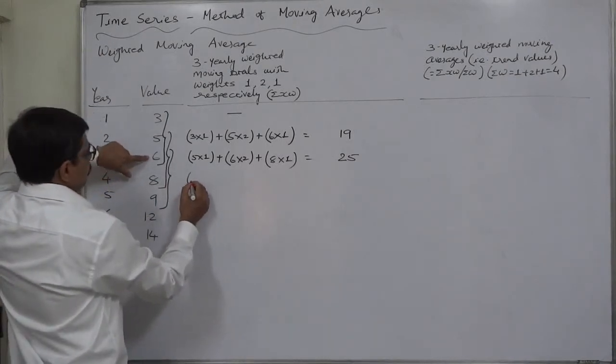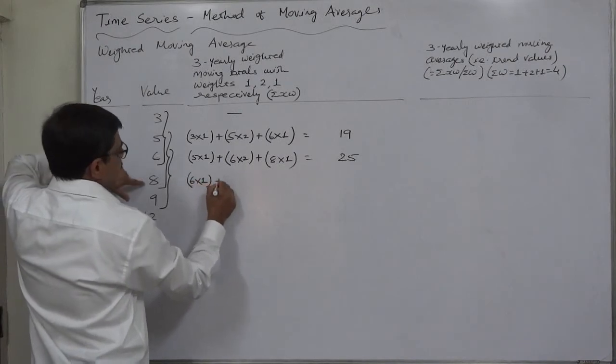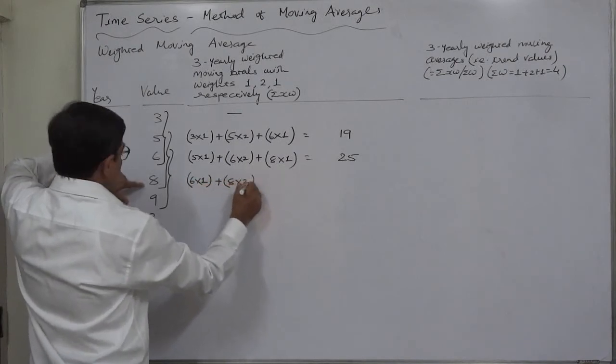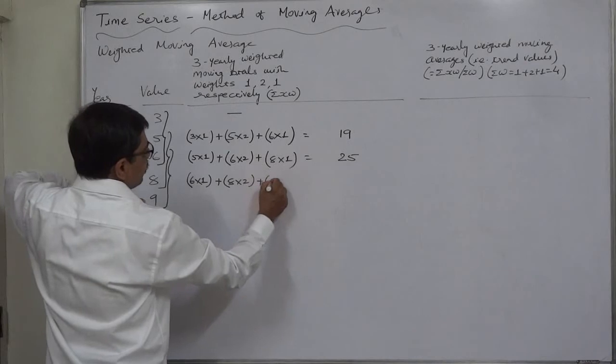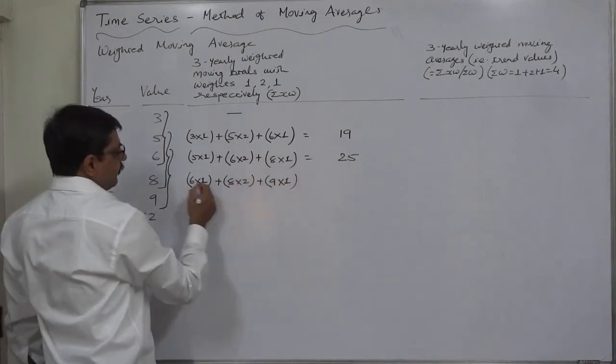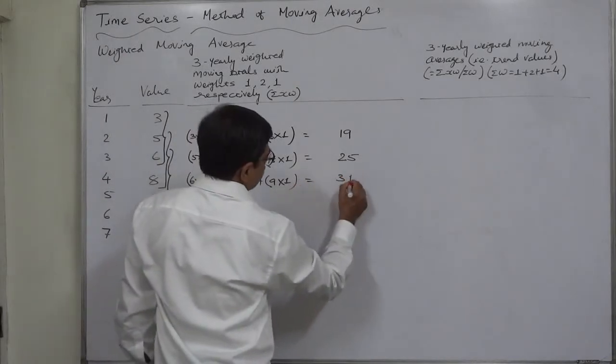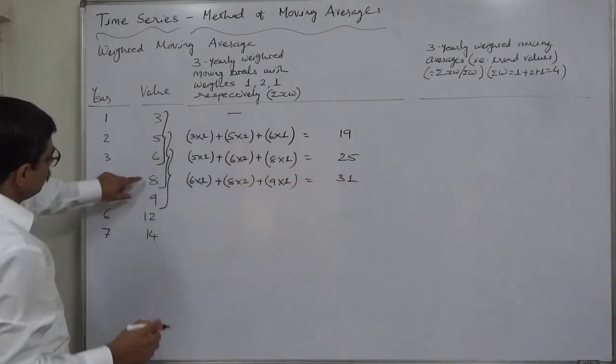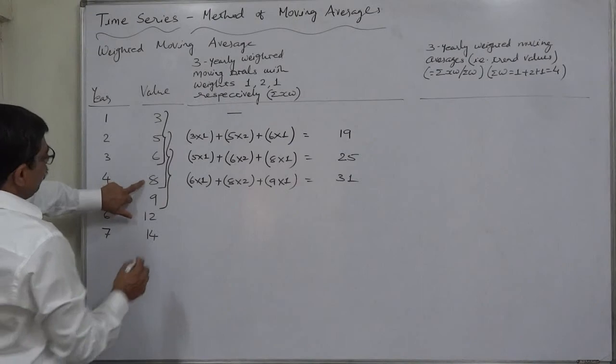Now the summation of third, fourth, and fifth value, in which first is 6 multiplied by 1, second is 8 multiplied by 2, and third is 9 multiplied by 1. 8 into 2 is 16, plus 9 is 25, plus 6 is 31.